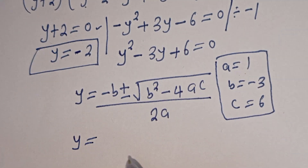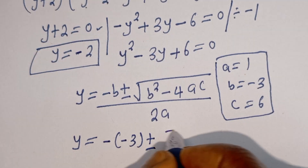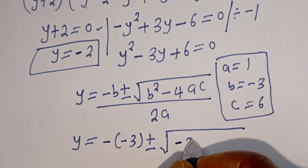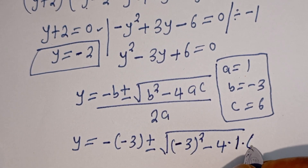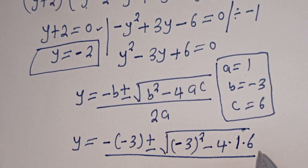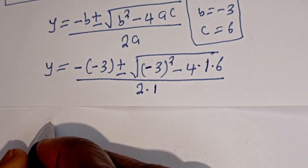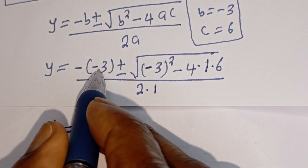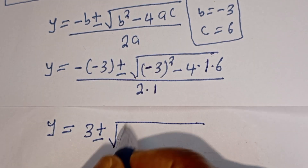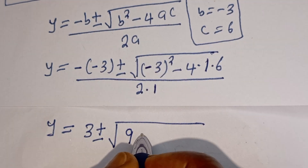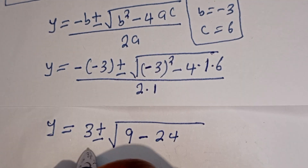Then y equals minus (minus 3), plus or minus square root of (minus 3) squared minus 4 times 1 times 6, divided by 2 times 1. This gives y equals 3, plus or minus square root of 9 minus 24, divided by 2. That is y equals 3, plus or minus square root of minus 15, divided by 2.